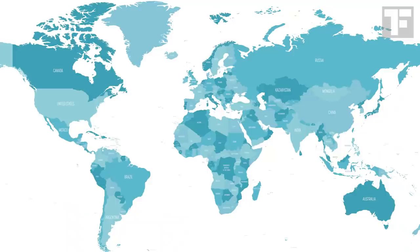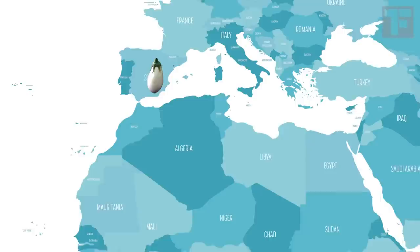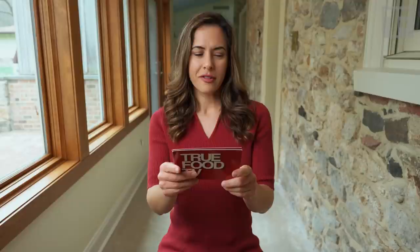The eggplant originally comes from India. So you can imagine that that vegetable was harvested and taken by Arab-speaking traders back through the Middle East. The Moors brought it up into Spain, Spain is next to France, and then it got to the UK.